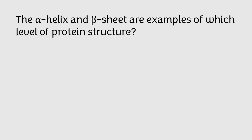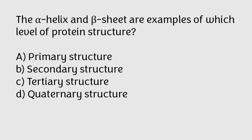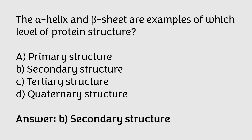The alpha helix and beta sheet are examples of which level of protein structure? Primary structure, secondary structure, tertiary structure, quaternary structure. The correct answer is option B. The alpha helix and beta sheets are examples of the secondary level of protein structure.